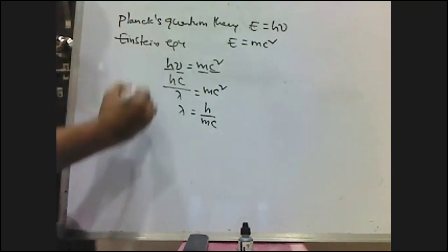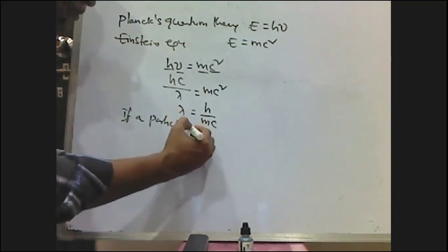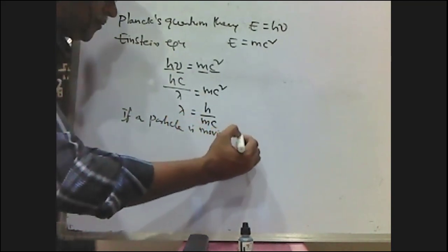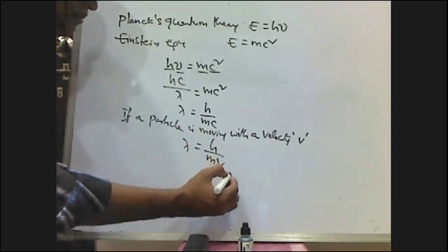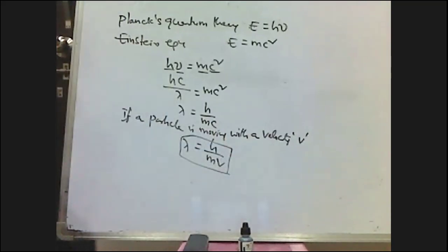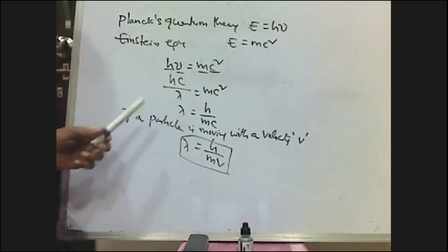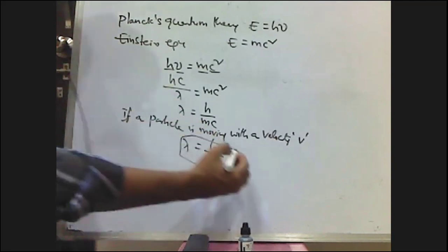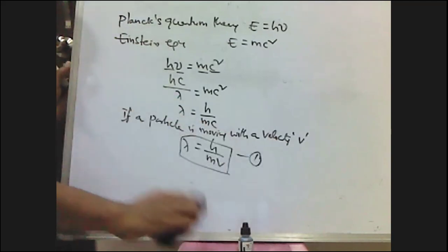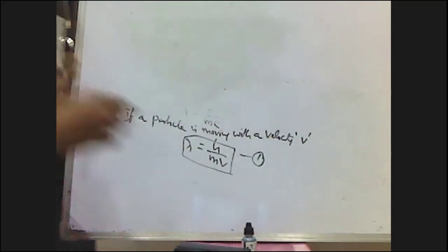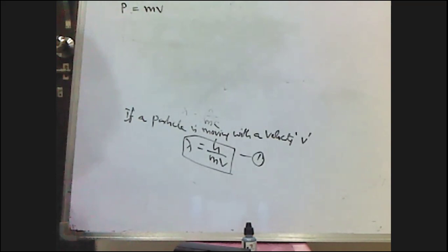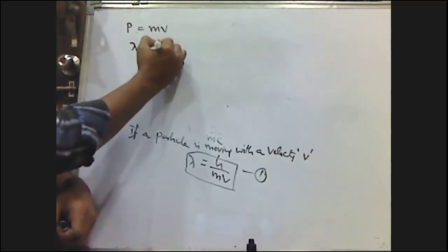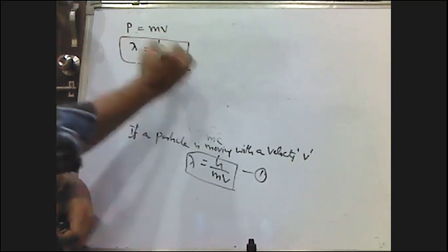If a particle is moving with velocity v (instead of c for light), then lambda is equal to h by mv. This equation is called the De Broglie equation — one expression of the De Broglie equation. We also know that linear momentum p = mv, so another expression is lambda equals h by p.